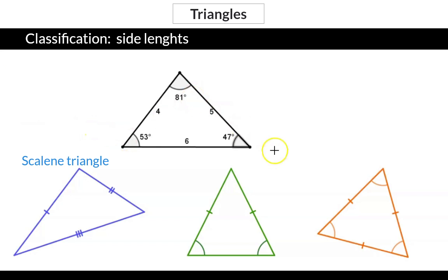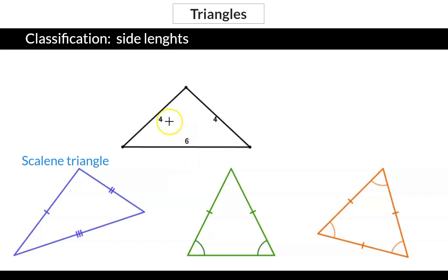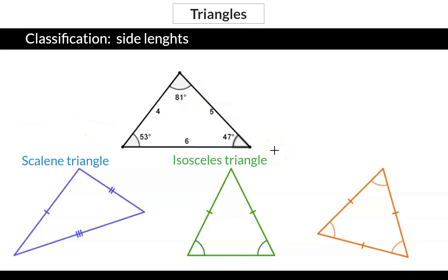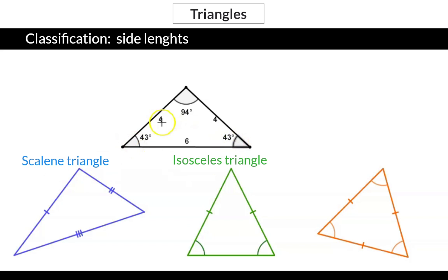Next up we are going to have a look at a triangle where two of the three sides have equal lengths. This is called an isosceles triangle, and here we have our two equal sides. If we have a look at the angles of such a triangle, you will see that the two angles that are straight across from the two equal sides will also be equal in size.